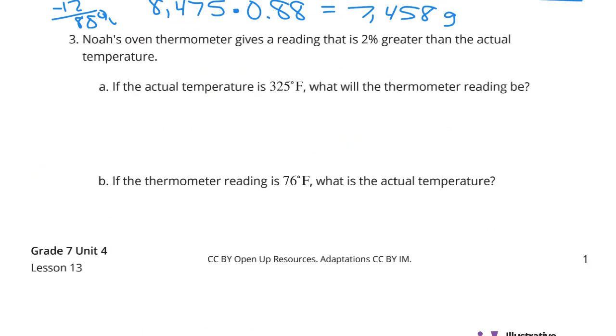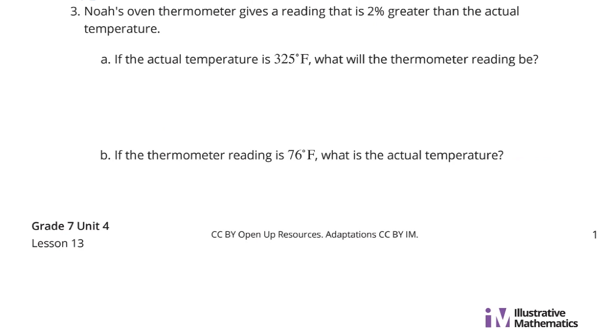Question three. Noah's oven thermometer gives a reading that is 2% greater than the actual temperature. If the actual temperature is 325 degrees, what will the thermometer reading be?